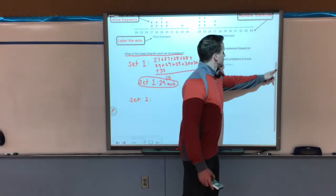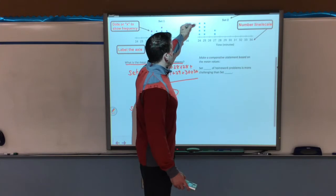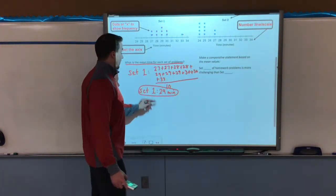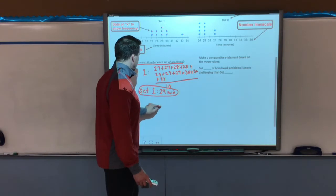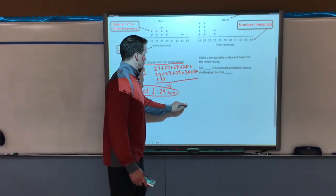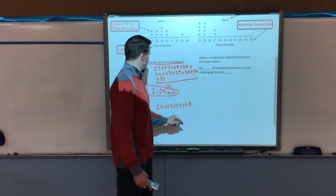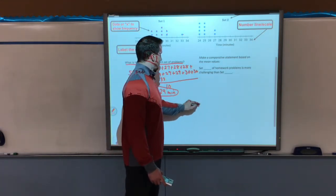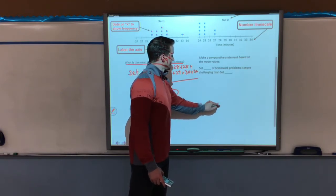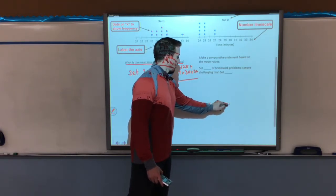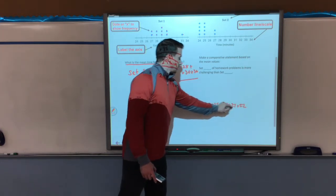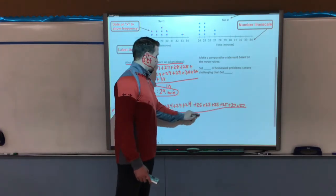Alright, so for set two, I have four 24s, four 25s, and two 27s. So I'm going to add all those up. So 24, four times. 25, four times. And finally, two 27s. Again, that's 10 total values. So I'm dividing that by 10.